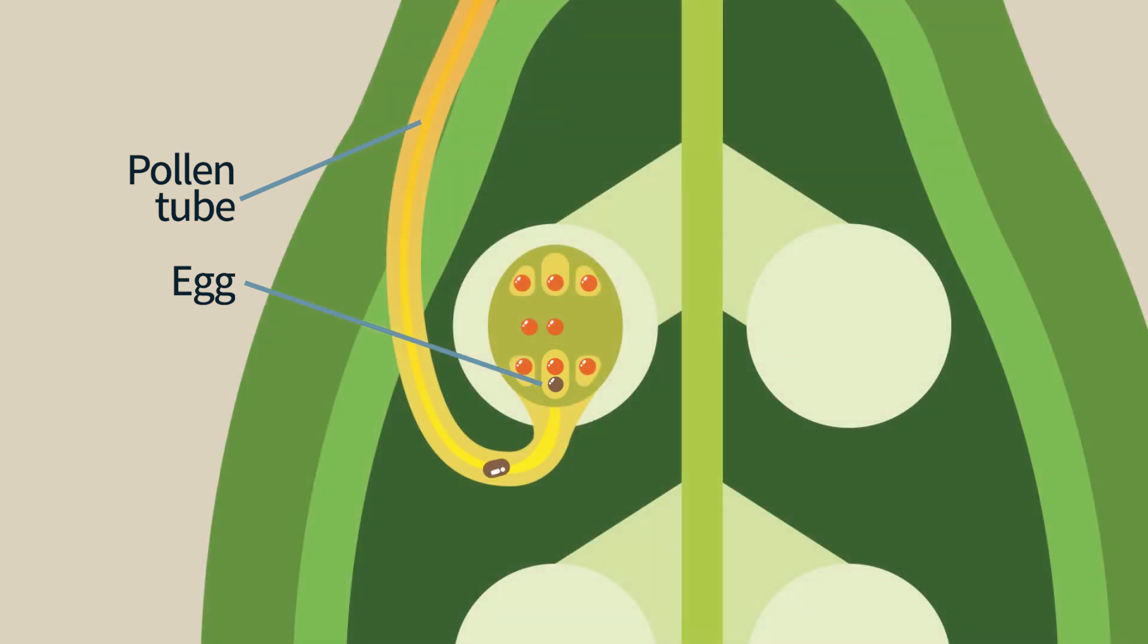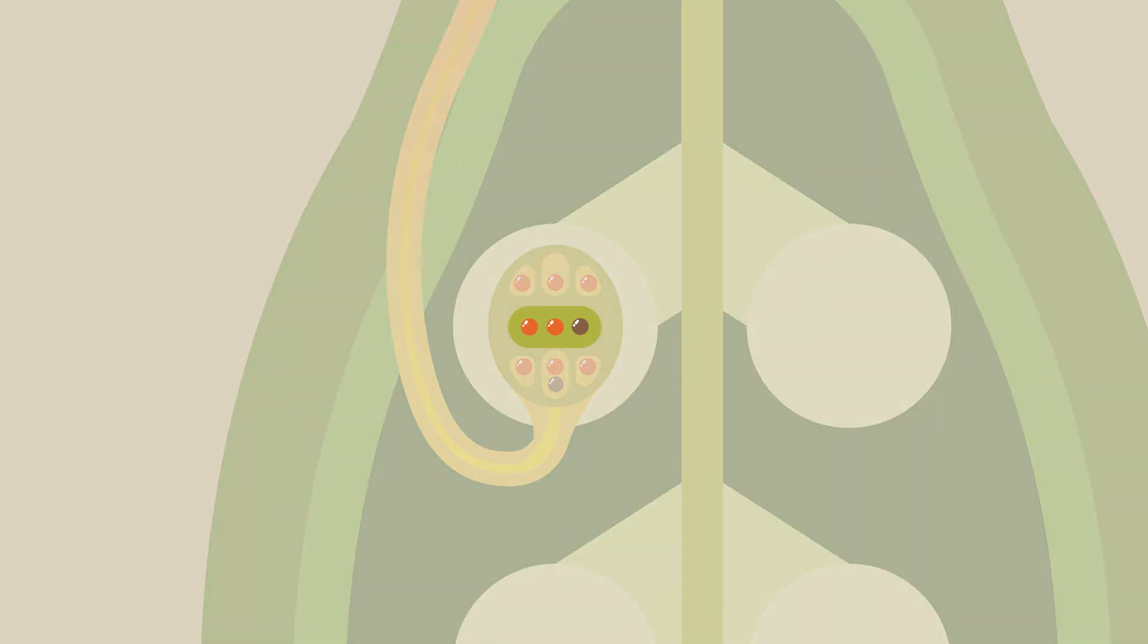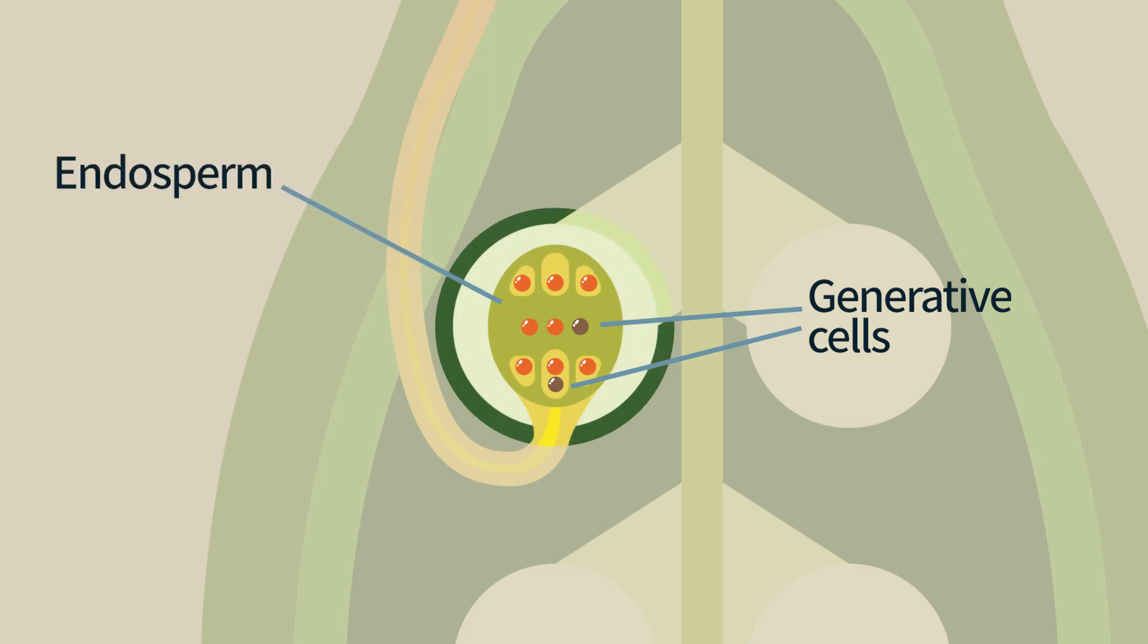The second generative cell will fuse with the cell that will give rise to the endosperm. As this cell is already diploid, it will now be triploid, having three sets of chromosomes. This double fertilization of the egg cell and the endosperm cell will trigger the development of the seed.